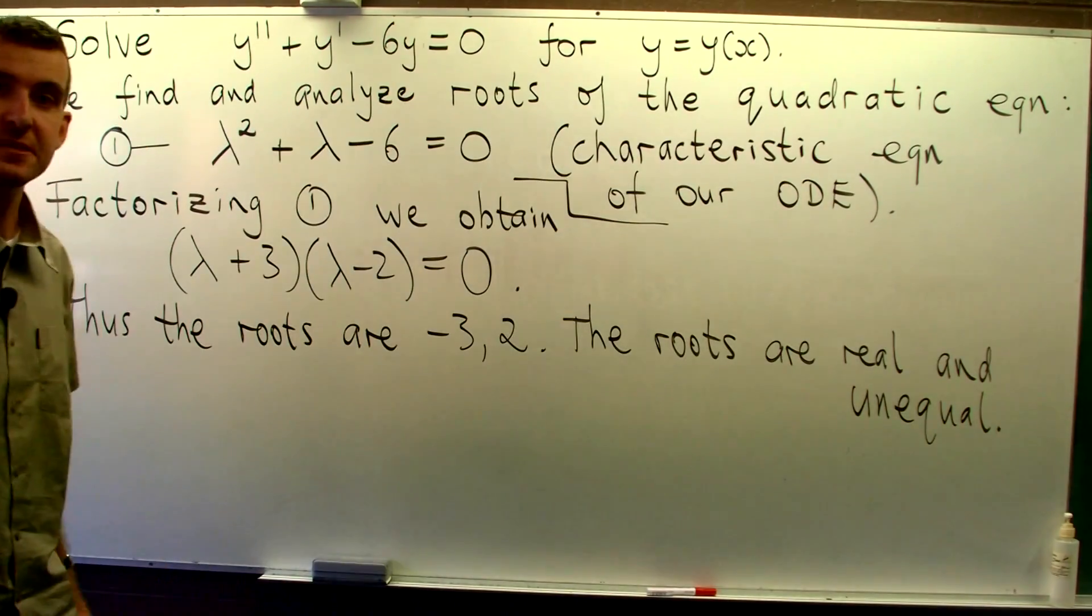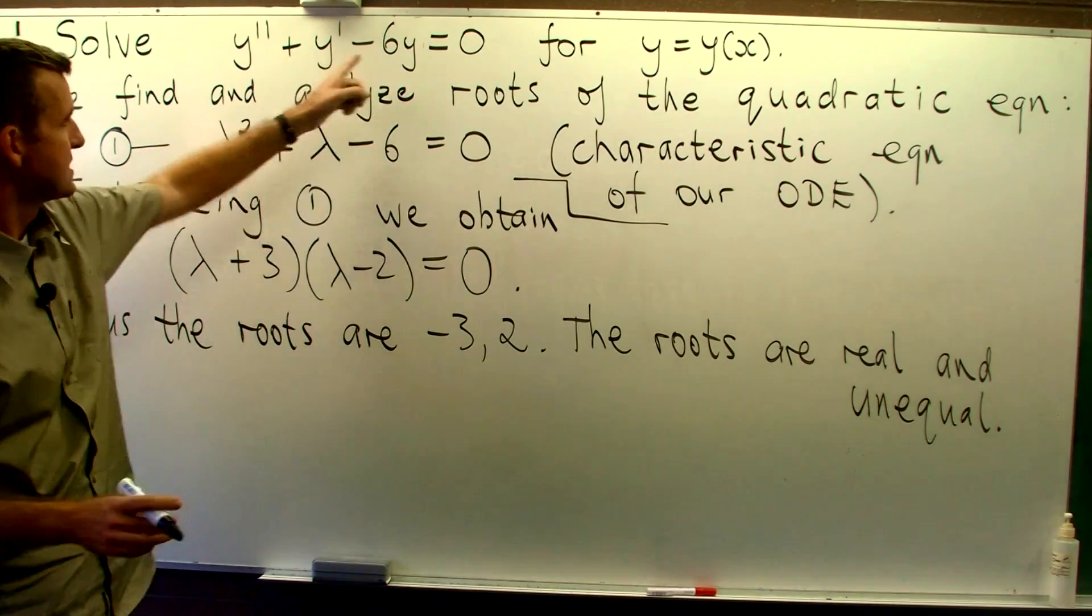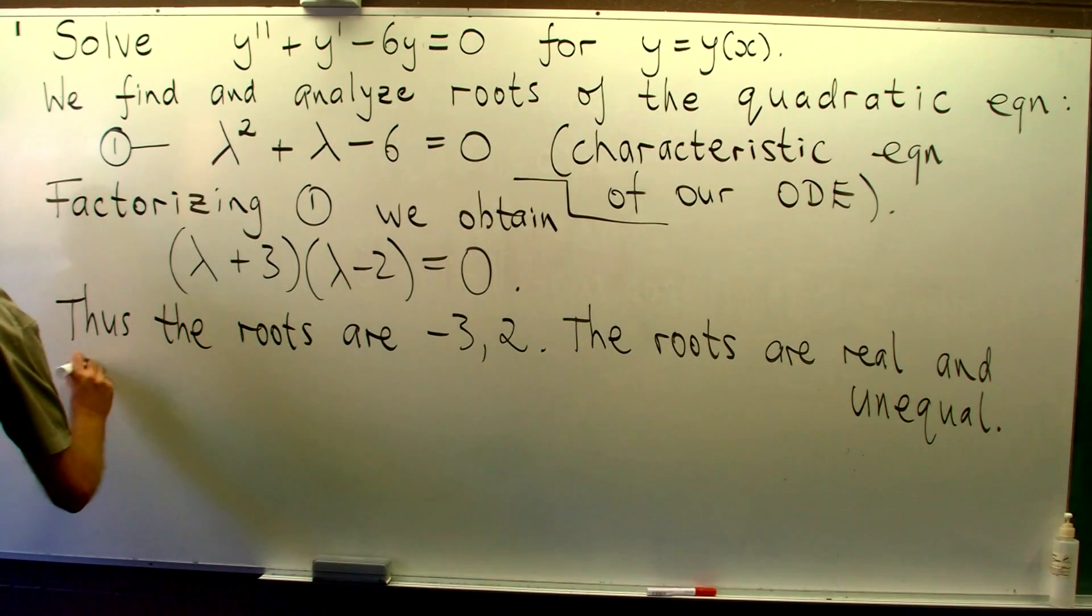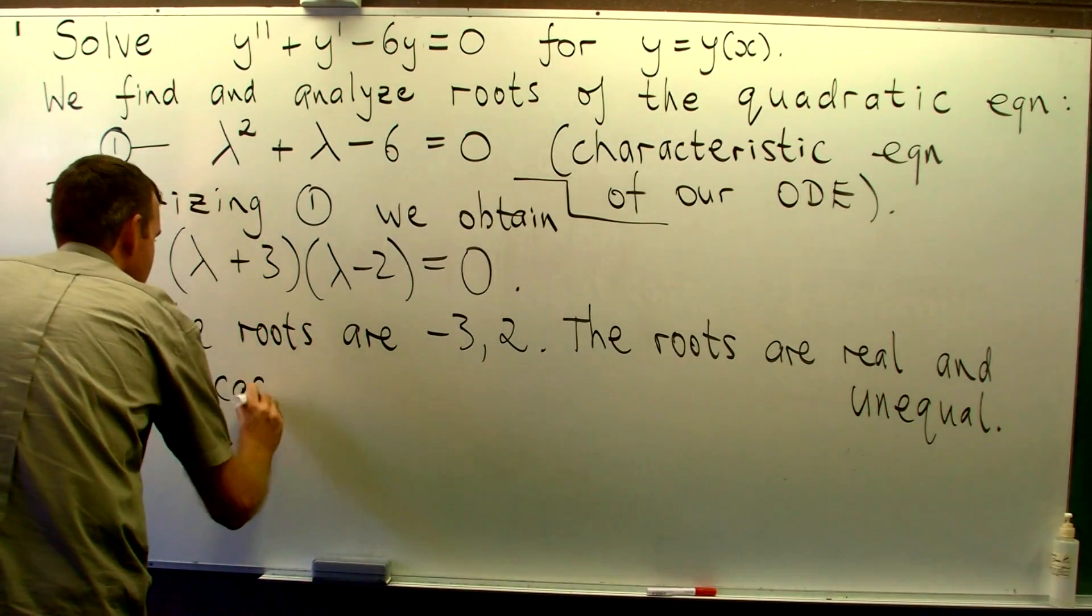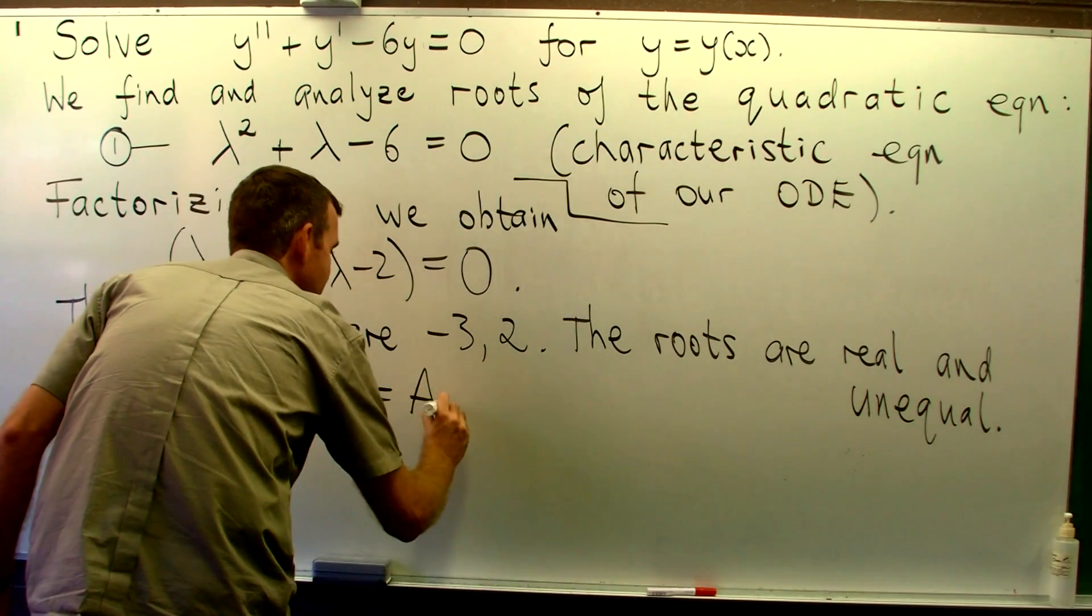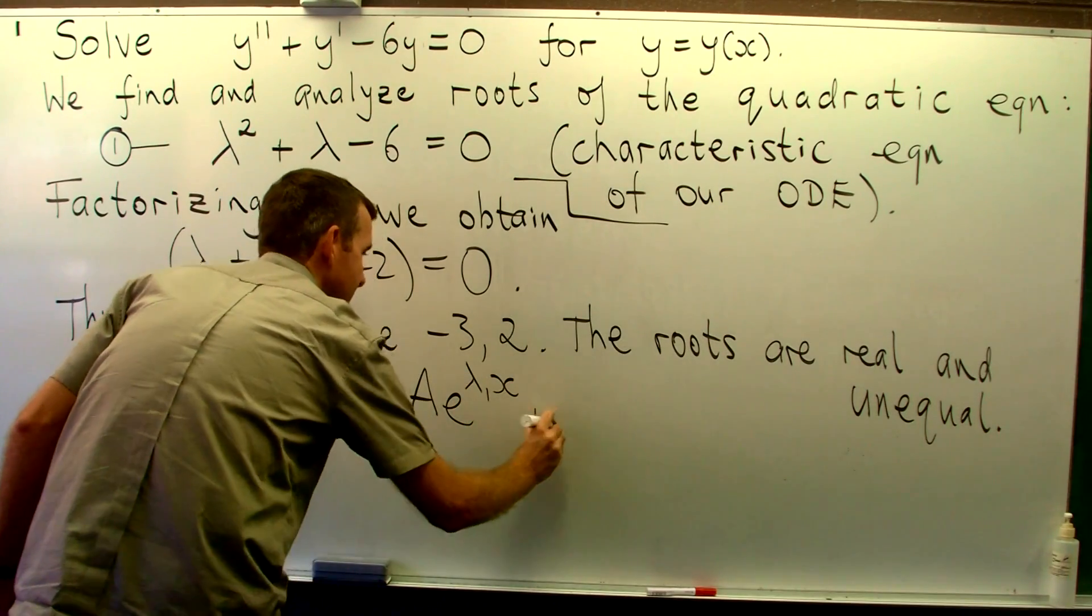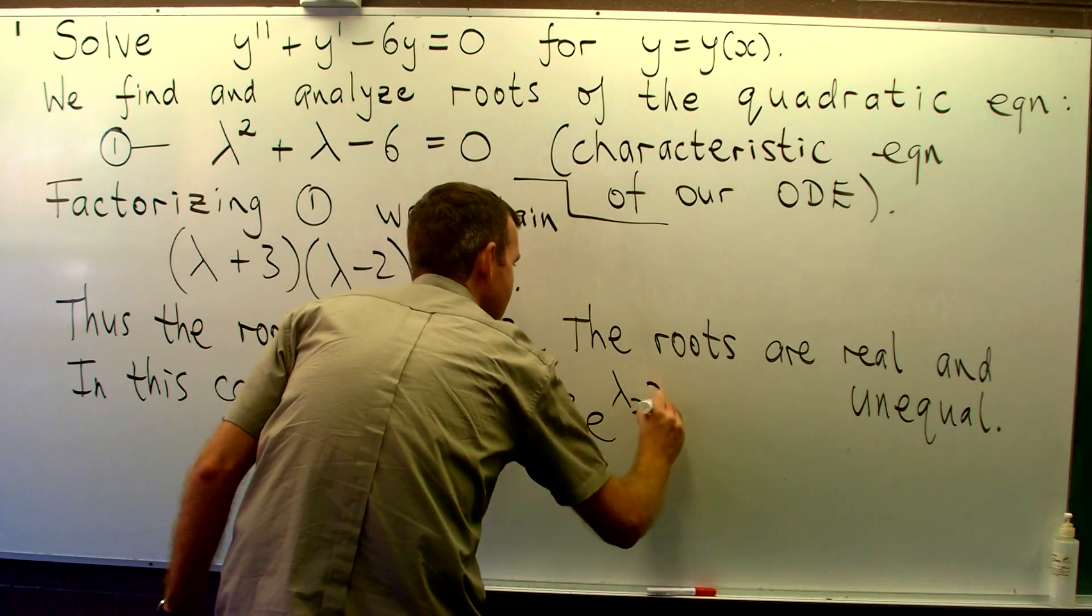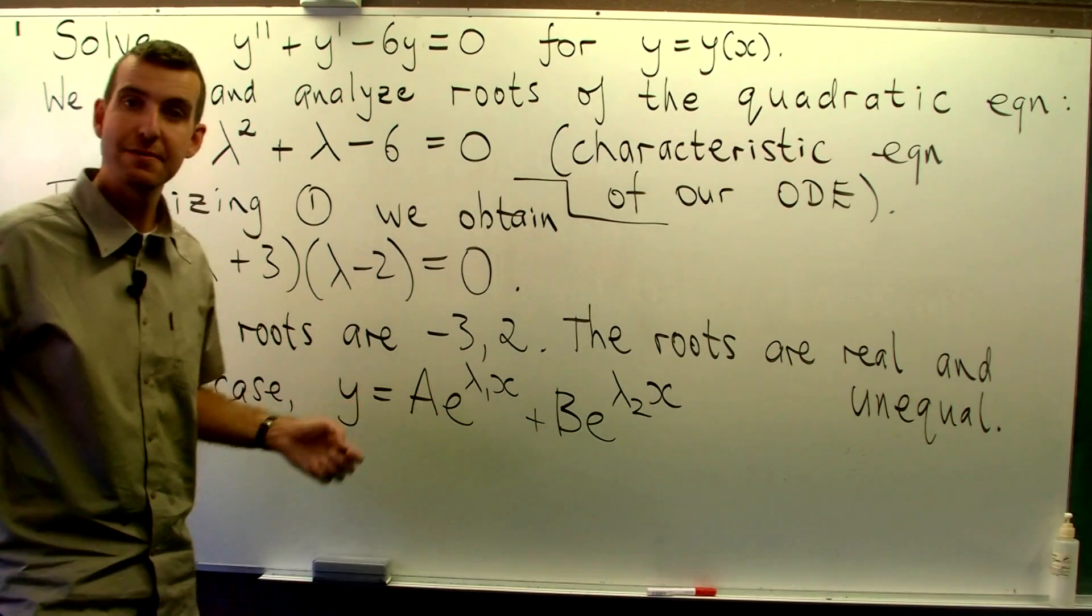That's important because in this particular case, there's a special form of the solution to our problem. And this is the following form. Here big A and big B are just arbitrary constants.